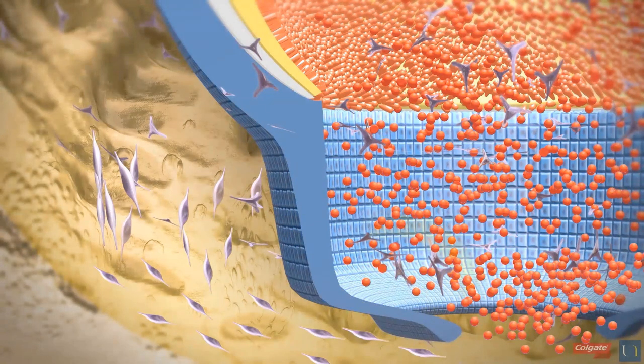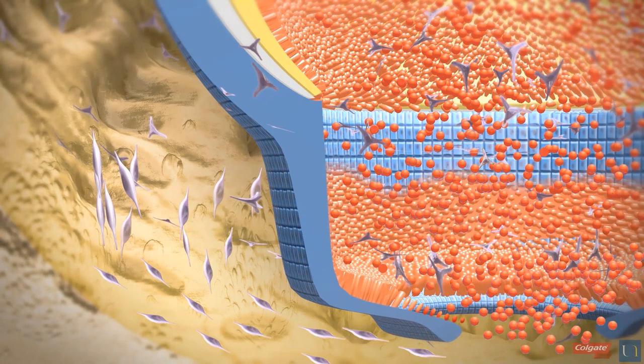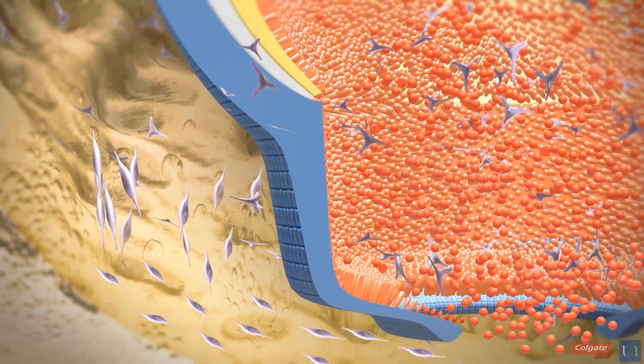For this to happen, the diaphragm sends induction messages to the ectomesenchymal cells of the apical papilla. These messages induce the differentiation of the ectomesenchymal cells into odontoblasts.